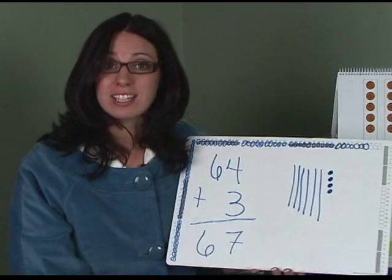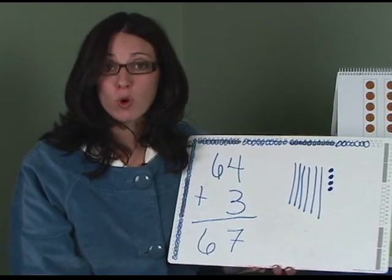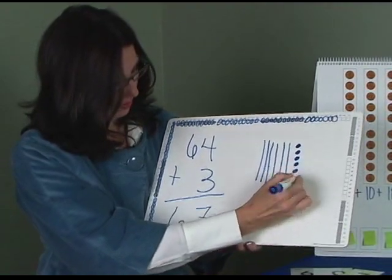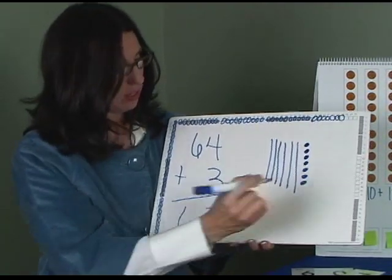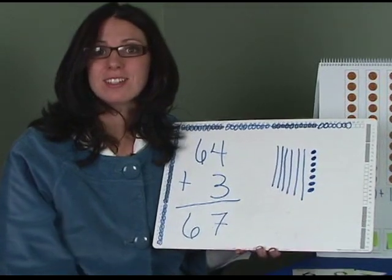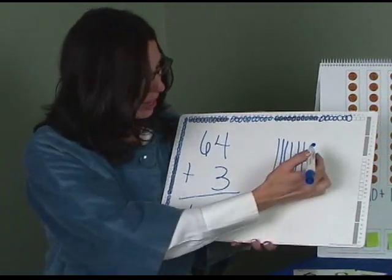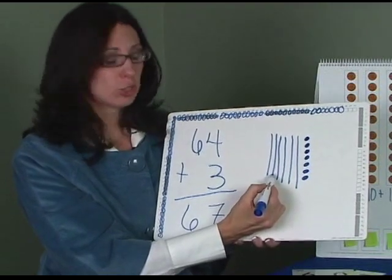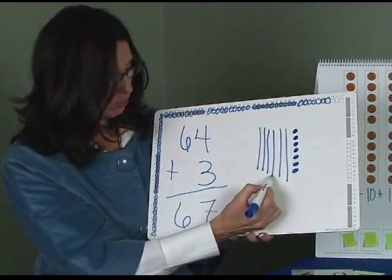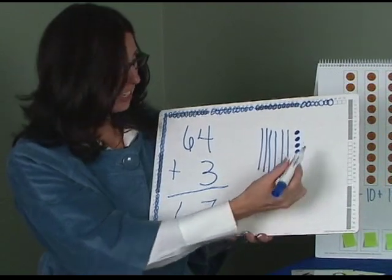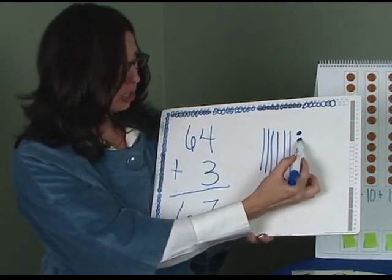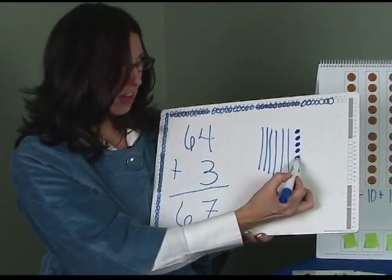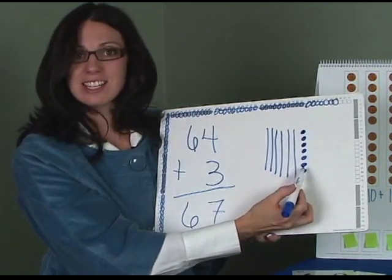Now I need to add 3 more to my proof picture. Have I made a new 10? No. So I go ahead and am able to now count: 10, 20, 30, 40, 50, 60, 61, 62, 63, 64, 65, 66, 67.